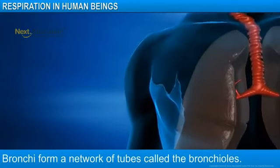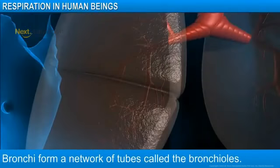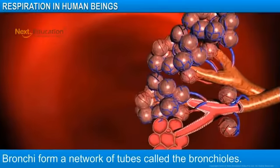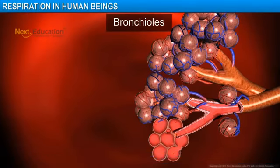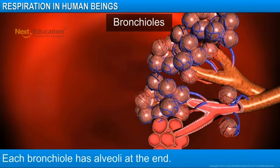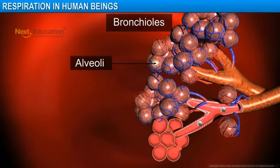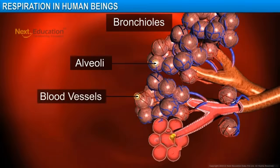The bronchi are like a network of tubes that keep branching into smaller tubes called bronchioles. At the end of each bronchiole, you will find balloon-like structures called alveoli. The alveoli provide a surface for the exchange of oxygen and carbon dioxide. The walls of the alveoli contain a massive network of blood vessels.